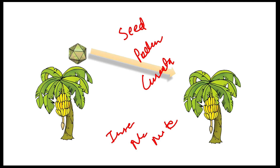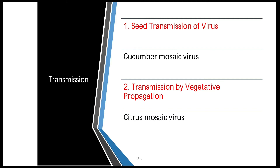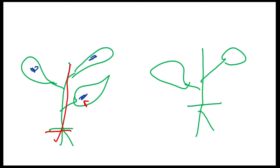First, let's look at seed transmission of virus. Whenever a virus transmits through a seed, it is called seed transmission. For example, cucumber mosaic virus — when an infected plant has a virus present inside it, flowering occurs, seed formation happens, and at that time the virus enters the seeds through phloem, or it remains present in the seed coat. In the next season, when we use this infected seed, the plant grows and simultaneously the virus multiplies inside it, and this plant acts as an inoculum and then spreads the virus.